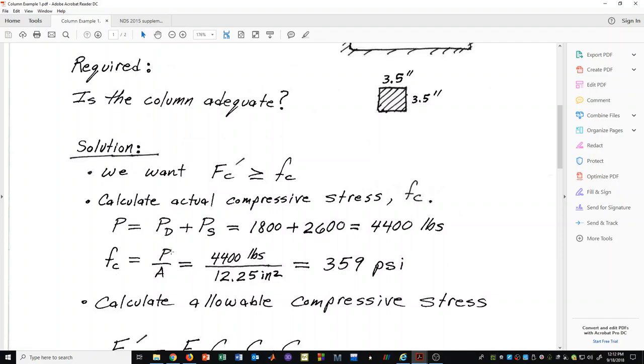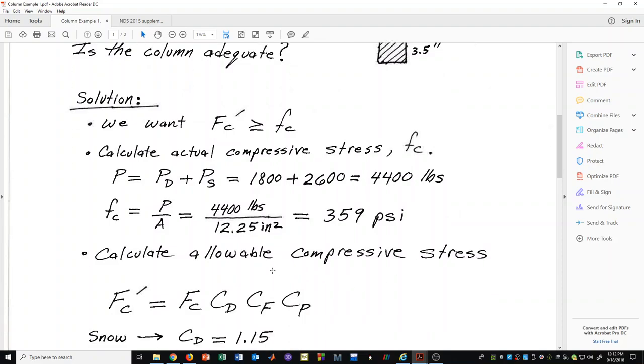Adding those two together we get 4,400 pounds. Then we can calculate the actual compressive stress by simply taking that total load and dividing by the cross-sectional area. We have 4,400 pounds divided by 12.25 square inches, we get 359 psi.